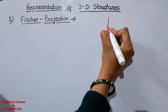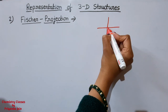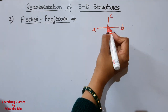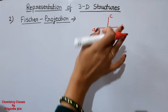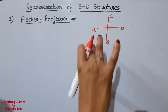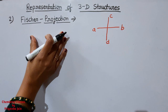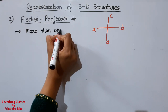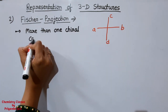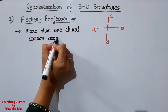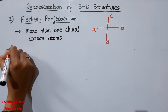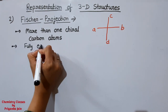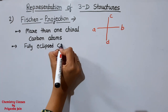In the Fischer projection, a cross-like structure is drawn where the center represents the carbon atom. The four groups are attached at the four ends of the cross. The two groups on the horizontal line are above the plane, and the two groups on the vertical line are below the plane. One important thing to remember: in the Fischer projection, the molecule is in the fully eclipsed conformation.